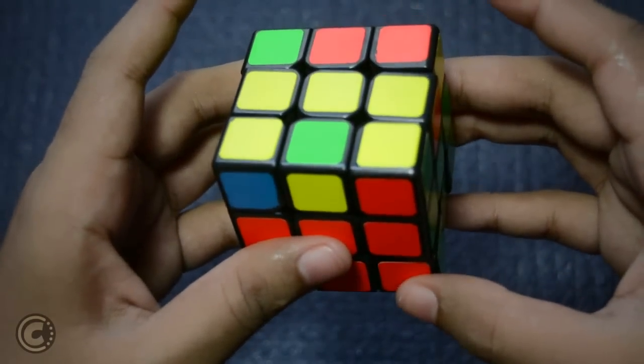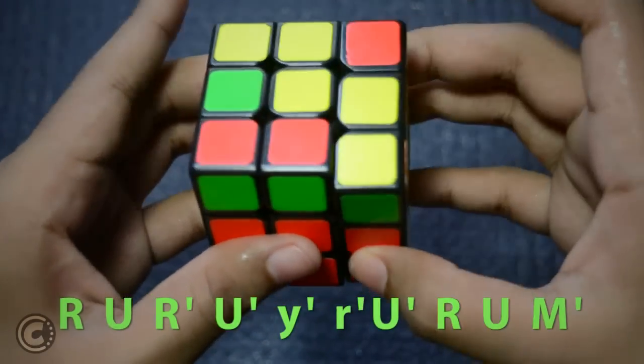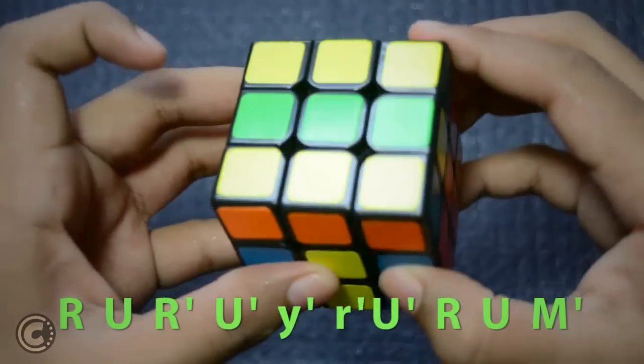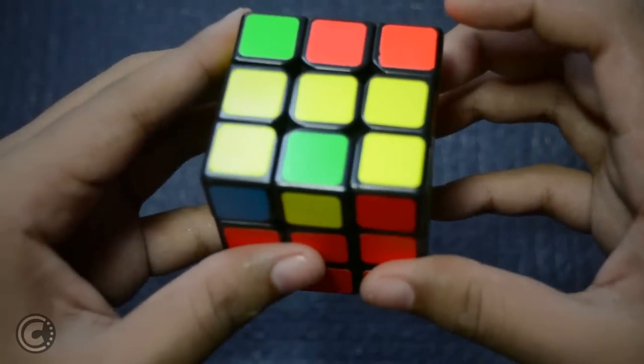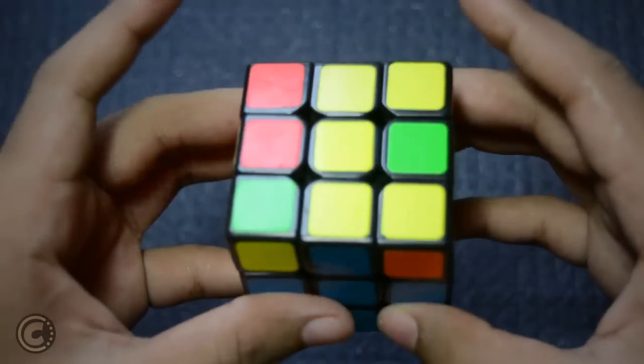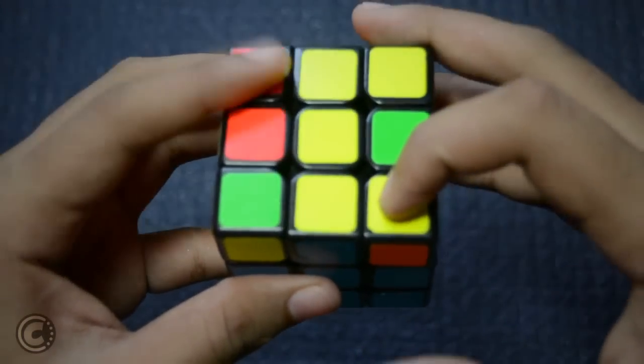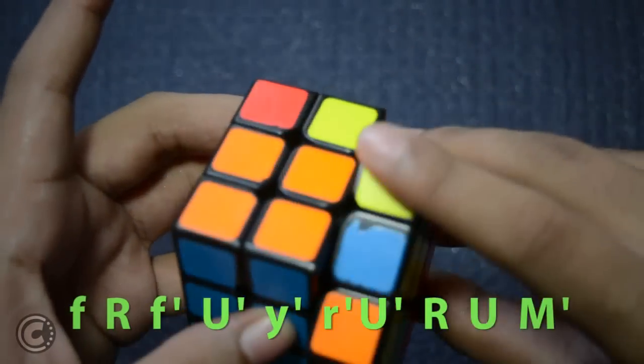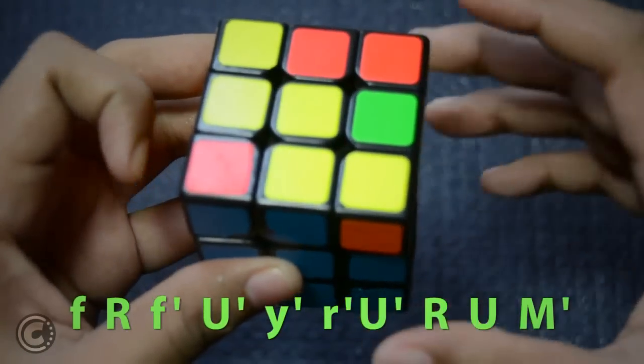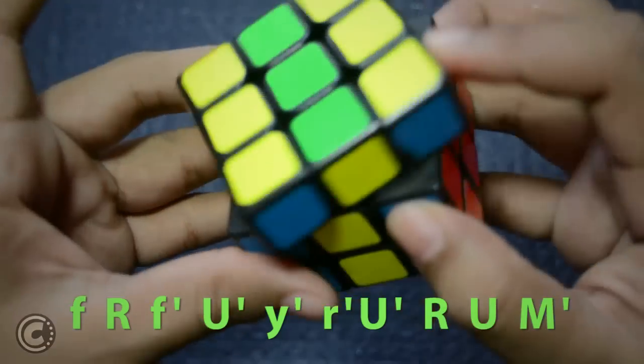Alternatively, you can also use this algorithm. However, I use the same algorithm for different cases. So you hold the case like this and then you do F R F', then U', and just insert it at the back like that.